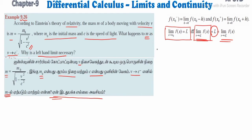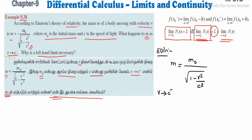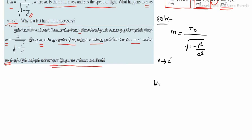First part of the solution: the given function is m = m0 divided by square root of 1 minus v squared divided by c squared. Now we apply the limit approach: limit as v tends to c minus of m equals limit as v tends to c minus of m0 divided by square root of 1 minus v squared divided by c squared.